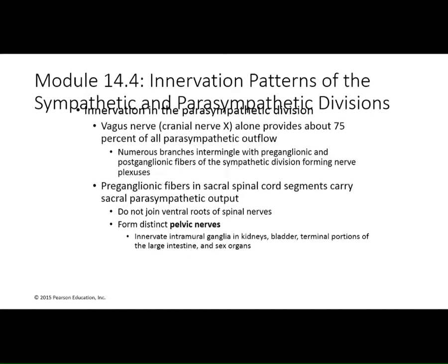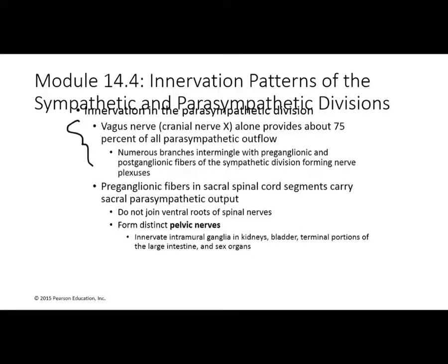For the parasympathetic, about 75% of all information travels through the vagus nerve. The rest comes from the sacral region of the spinal cord via pelvic nerves to the kidneys, bladder, intestines, and reproductive organs. Just think about what the sympathetic and parasympathetic divisions are doing and what systems they're affecting, and this will all make very good sense.